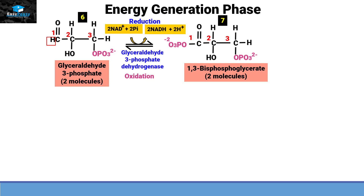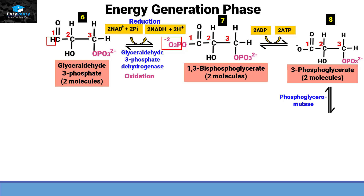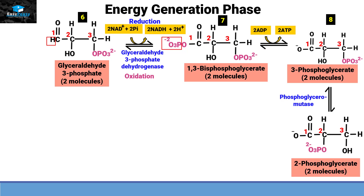In step 7, 1,3-bisphosphoglycerate converts into 3-phosphoglycerate. The phosphate attached to carbon number 1 is released and taken up by ADP, converting it into ATP. In step 8, 3-phosphoglycerate — with the help of phosphoglyceromutase — converts into 2-phosphoglycerate. This is an isomerization in which the phosphate shifts from carbon number 3 to carbon number 2.